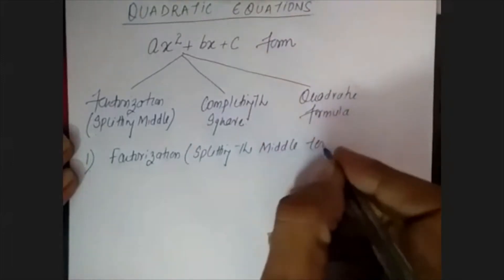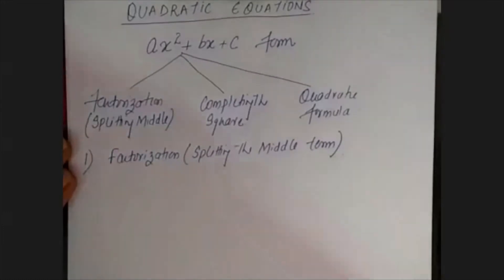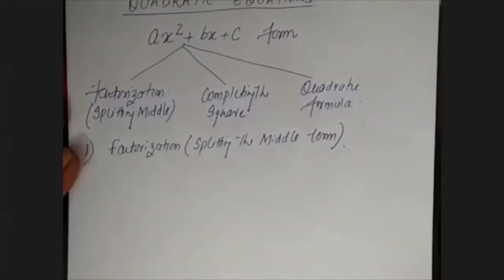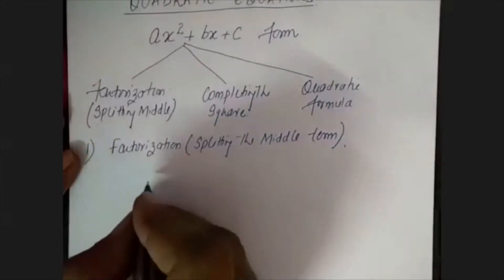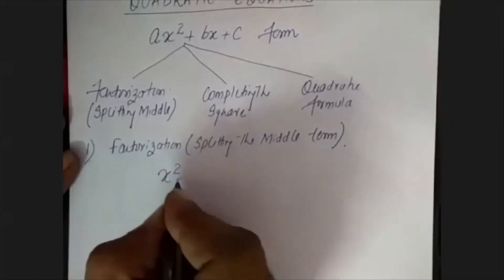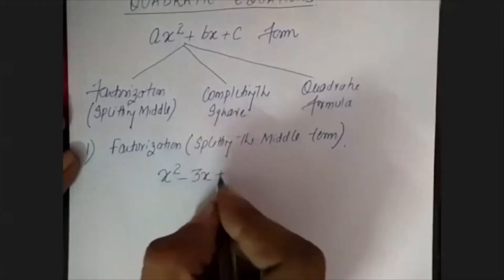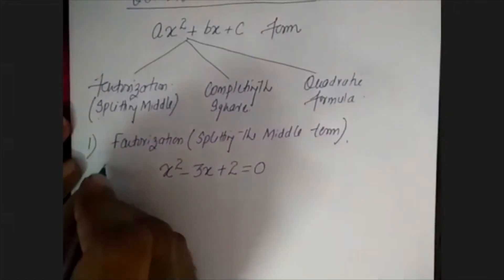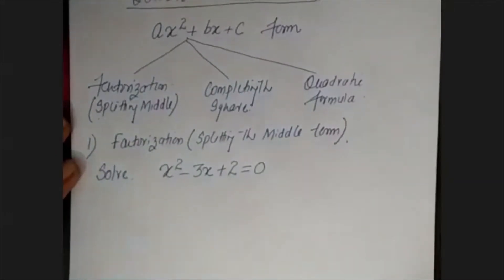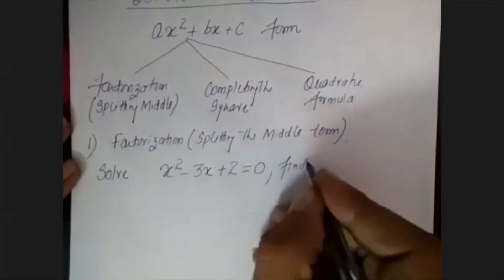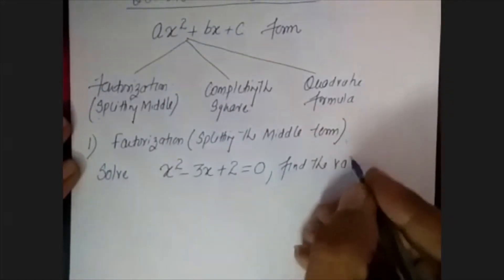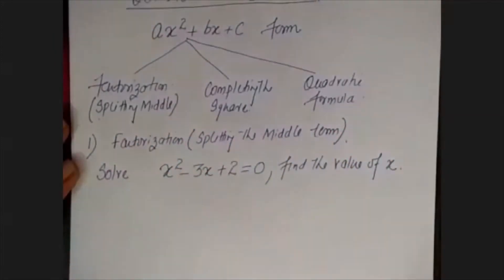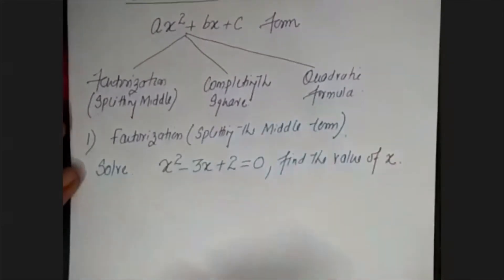If you are not told in the paper which method to use to solve the question, then this factorization method is the most easy method and it is very easy to solve. Let's take an example. The equation is x² - 3x + 2 = 0. The teacher tells us to solve it and find the value of x. Solve means to find the value of the variable.